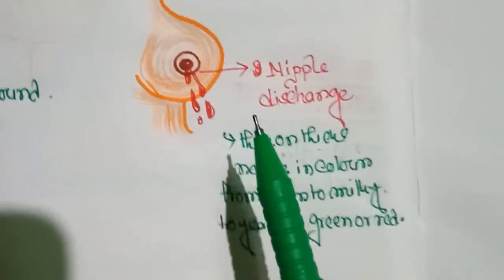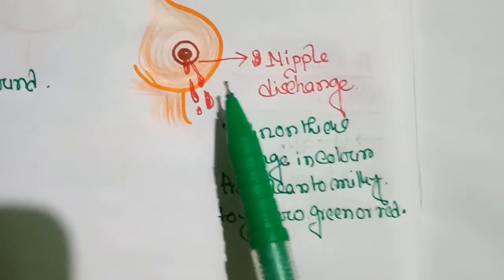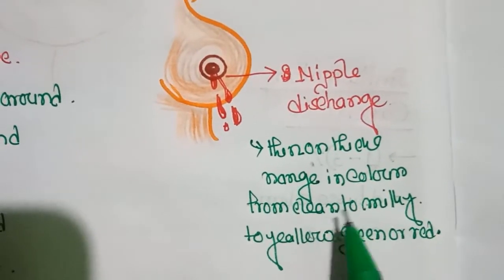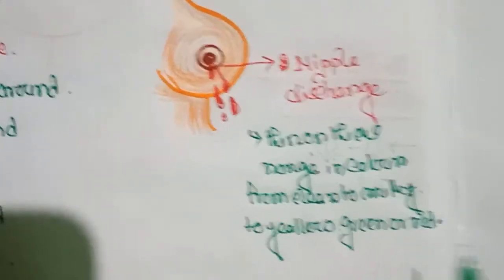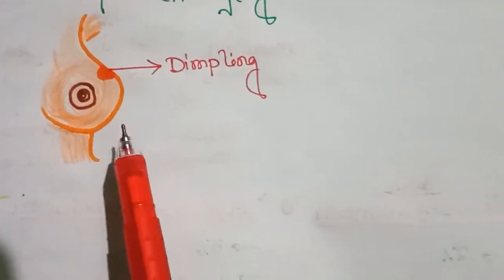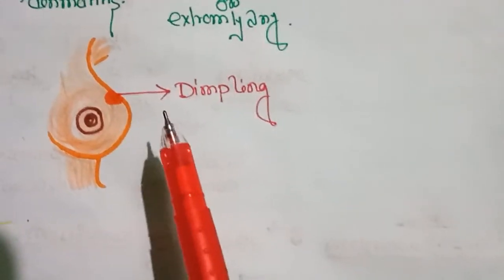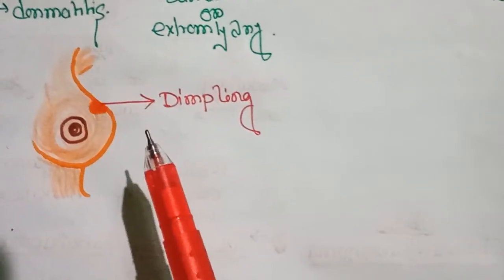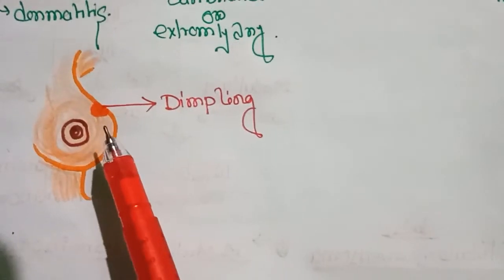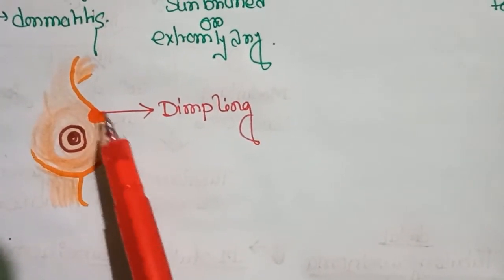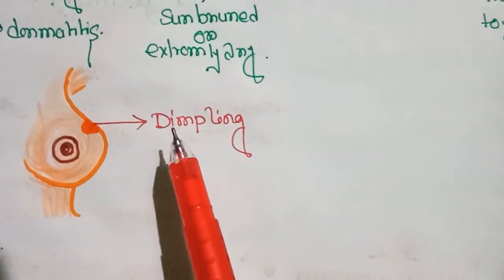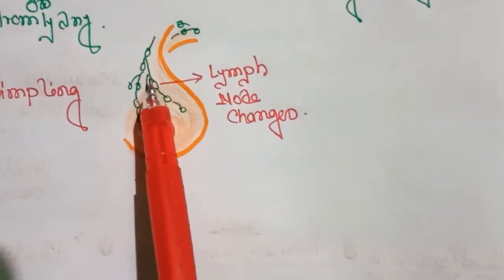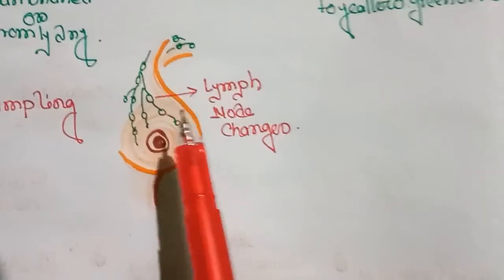The next symptom is nipple discharge — a person may observe discharge from the nipple which can be thin or thick and can range in color from clear to milky, yellow, green, or red. Next is dimpling of the skin, which can sometimes be a sign of inflammatory breast cancer, an aggressive type. Cancer cells cause fluid buildup in the breast, leading to swelling and dimpling. The next symptom is lymph node changes — lymph nodes are small, round collections of immune system tissue that filter fluids and capture potentially harmful cells including bacteria, viruses, and cancer cells.